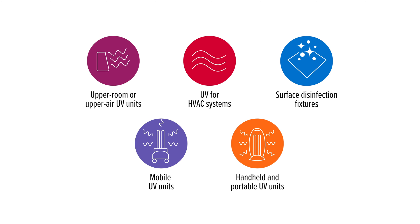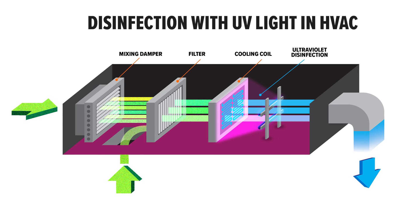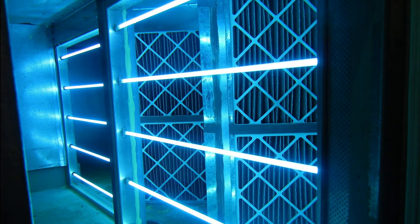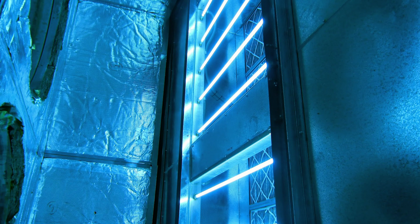A second application is UV fixtures for HVAC equipment. Installing UV lamps on HVAC coils or in ducts can disinfect the air circulating in a building. An added bonus, the UV lights also help keep the HVAC system cleaner.